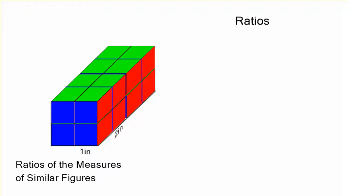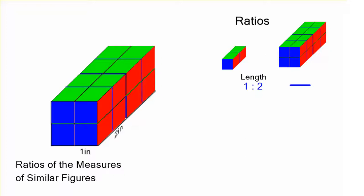Let's look at the ratios, the relationships between the measures. Looking at the lengths, length is one dimensional, just like width and height. That ratio here is going to be 1 to 2. All of the lengths are twice as long in the bigger figure.